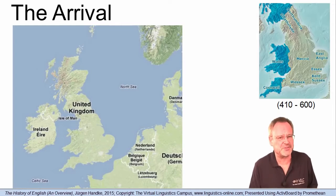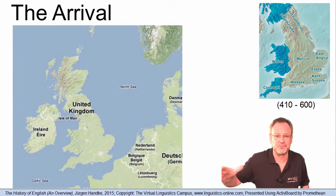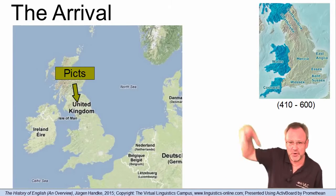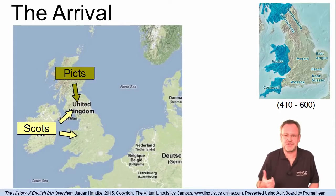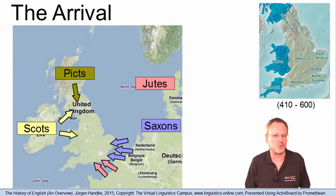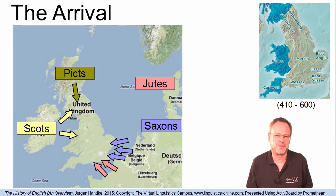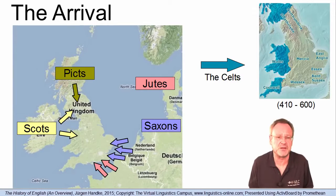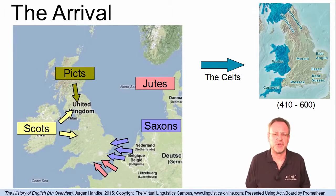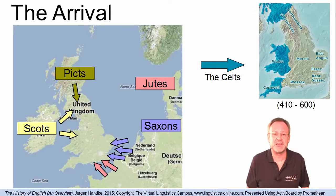In 410 after Christ, the Roman legions were withdrawn from Britain, leaving chaos. The Picts raided from the north, and the Scots from Ireland, while the Jutes and the Saxons attacked the eastern coasts. Throughout the 5th and 6th century, the Britons were slowly driven back into the mountain areas of Cumbria and Wales. Germanic-speaking tribes replaced the Celtic peoples.